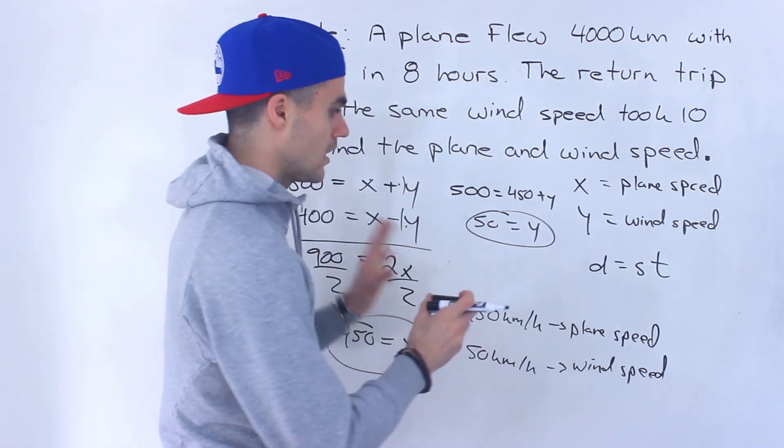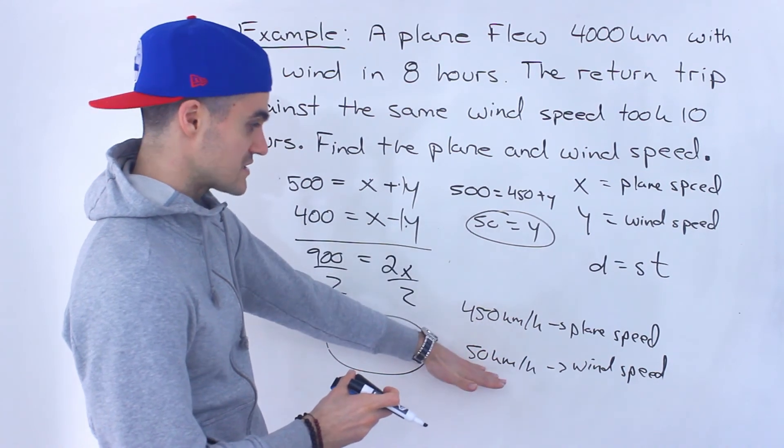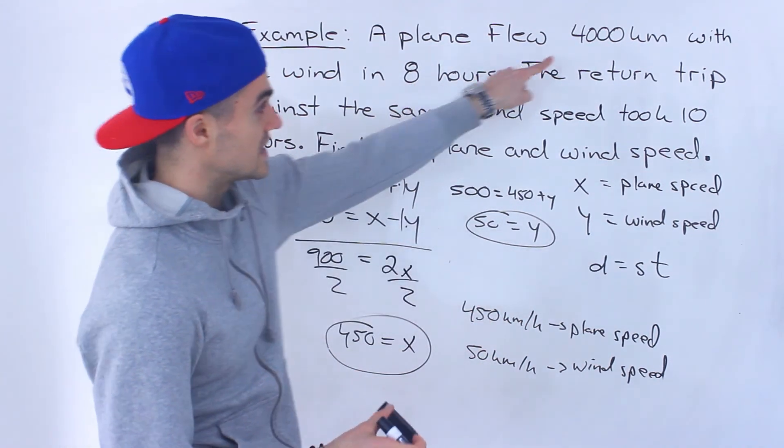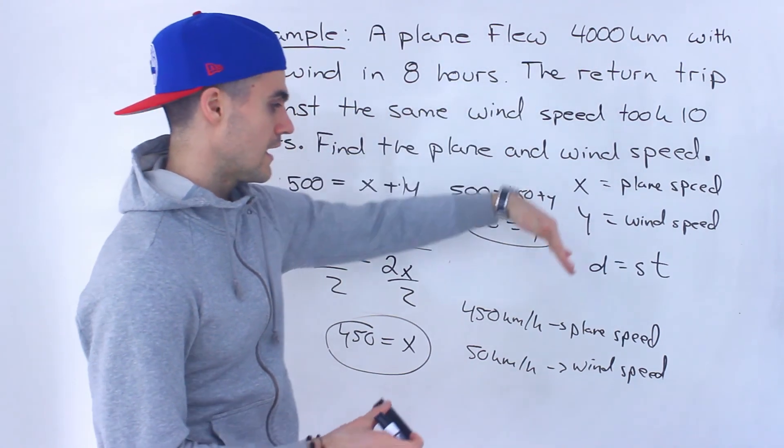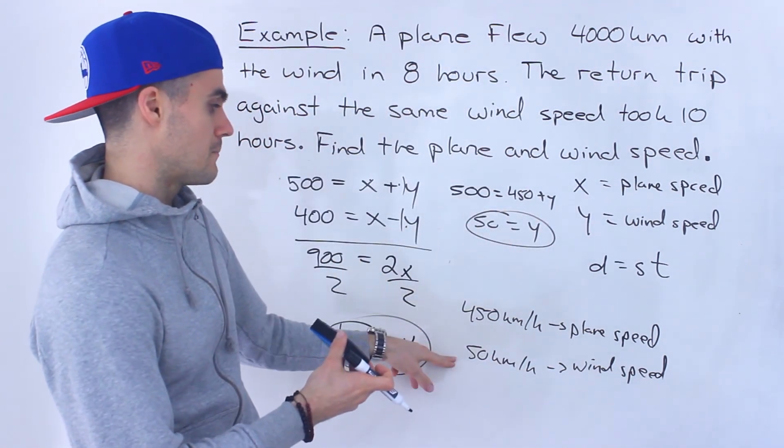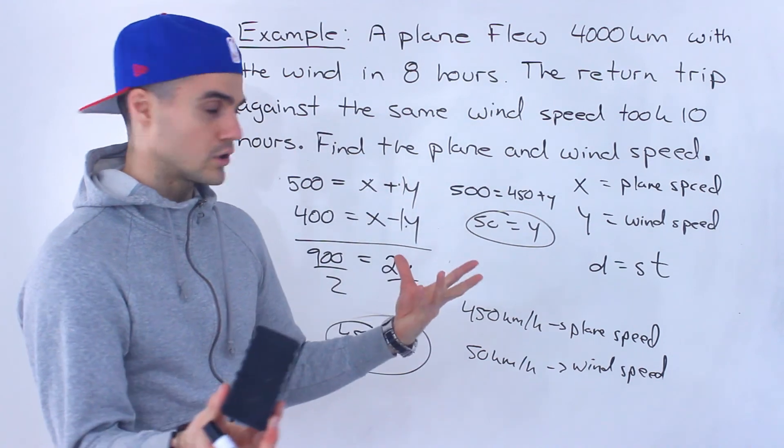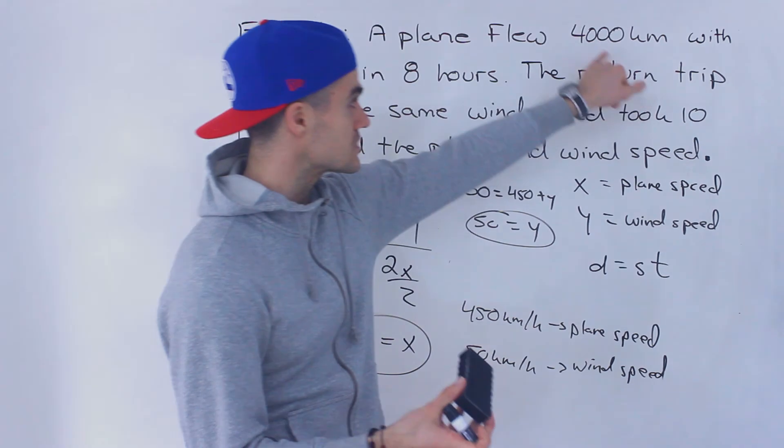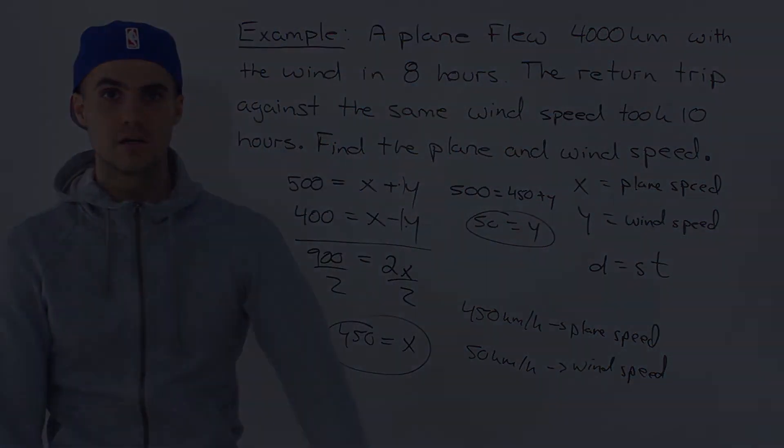And then you could check them. So when we're flying with the wind we would have 450 plus 50, 500 kilometers per hour. 500 kilometers per hour times eight hours gives us 4,000. And then if we're going against the wind it'd be 450 minus 50, which would give us 400 kilometers per hour. 400 kilometers per hour times 10 hours gives us that 4,000 coming back. And finally we'll see you again.